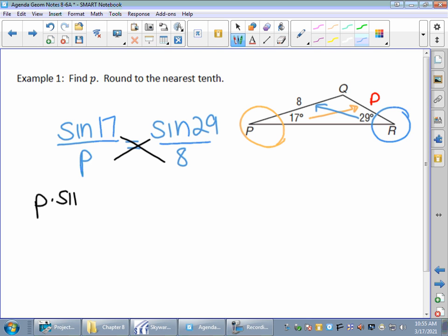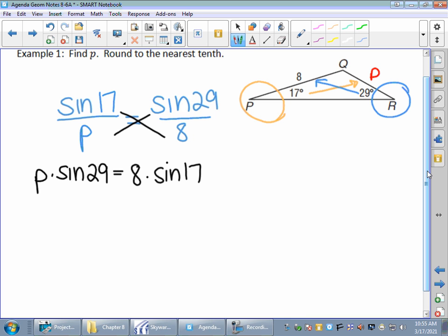So I would set up sine of 17 degrees over its opposite side P, that's what we don't know, equals the sine of 29 over its opposite side 8. Once we've got that set up, that's just a proportion. It looks busier than what we're accustomed to, but we're still going to cross multiply. I always like to do the cross multiplying with the variable on the left, so I'm going to write P.